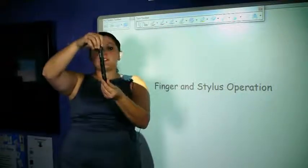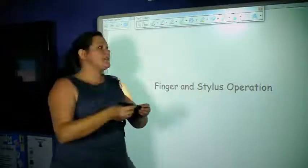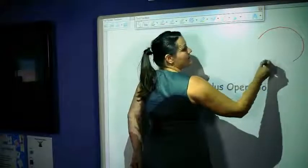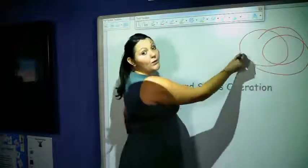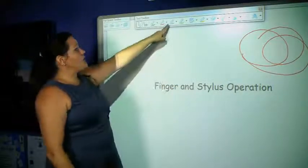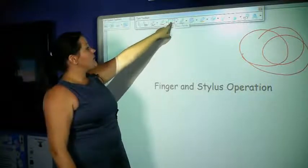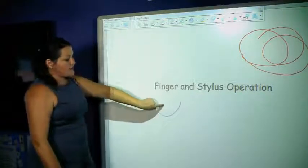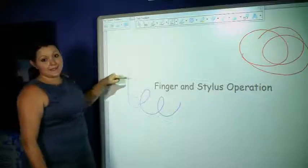I'm going to change the dial at the end of my stylus to red and I can write on the whiteboard here. Now using my finger I'm going to pick blue from the menu at the top here and I can do the same thing down here.